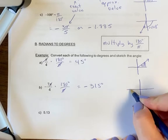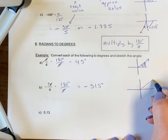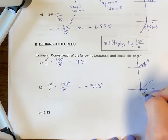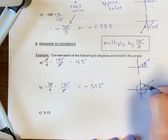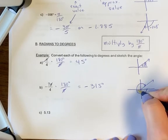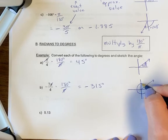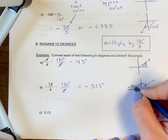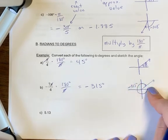So negative means you're going to go this way, all the way to halfway into quadrant one. So negative 315, this would be negative 90, negative 180, negative 270, negative 360. So negative 315 is halfway between there and quadrant one.